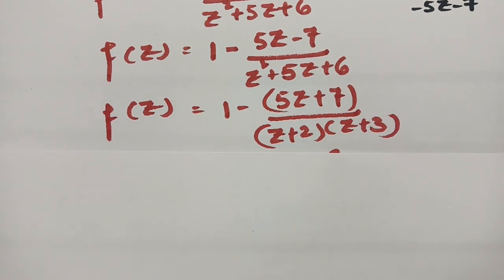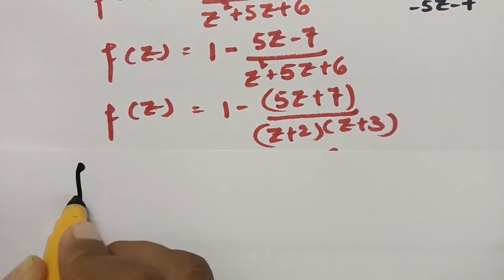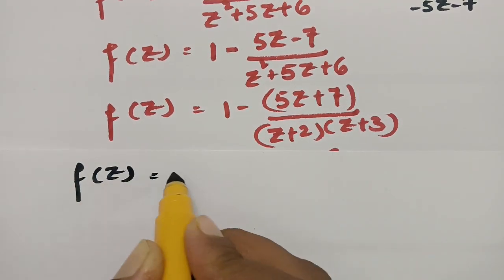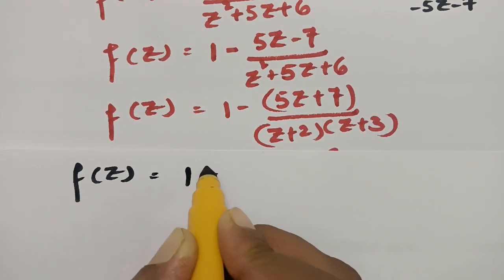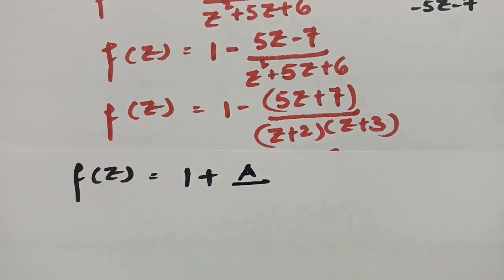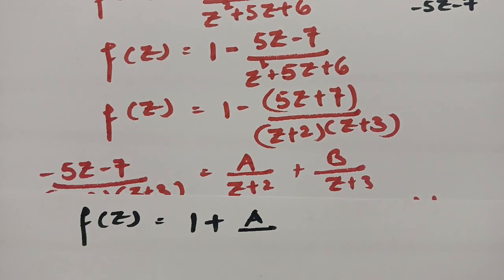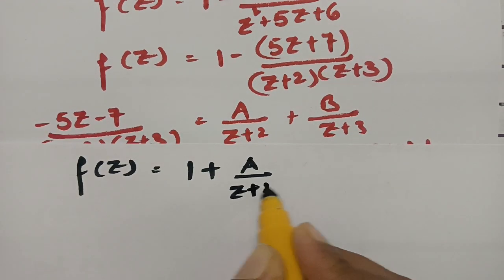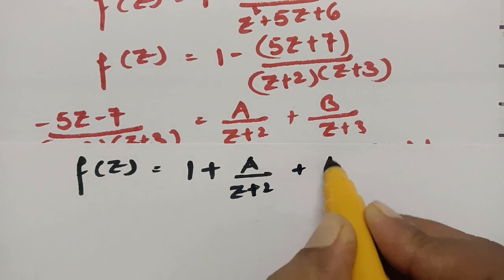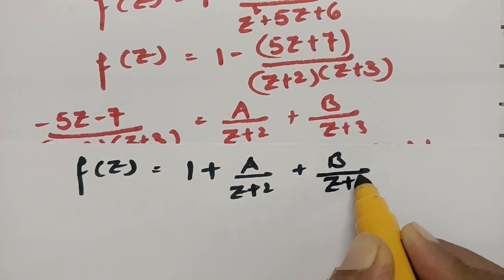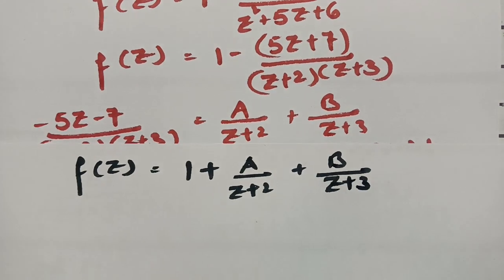Therefore f(z) = 1 + A/(z + 2) + B/(z + 3), which becomes f(z) = 1 + 3/(z + 2) + (-8)/(z + 3).